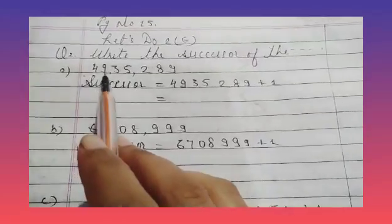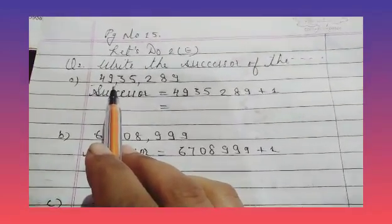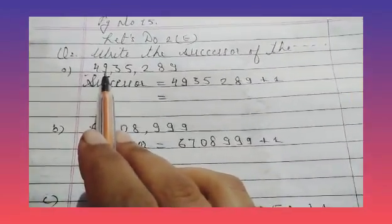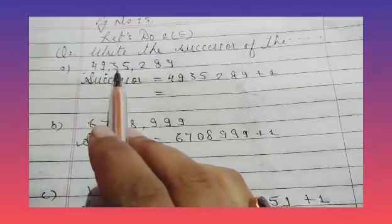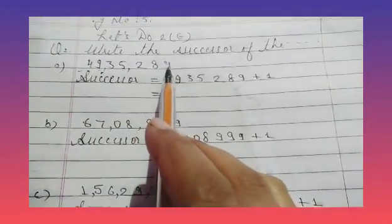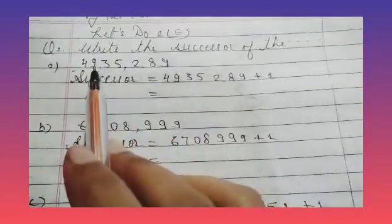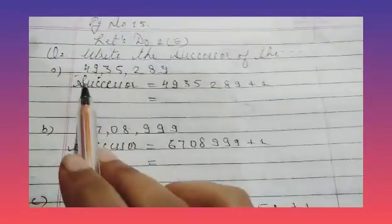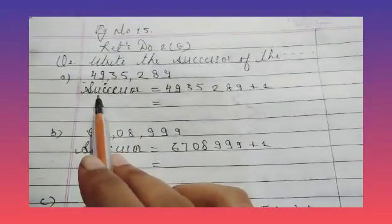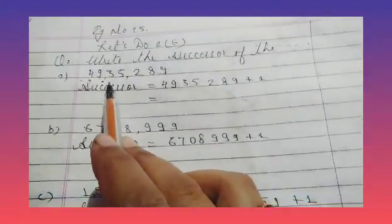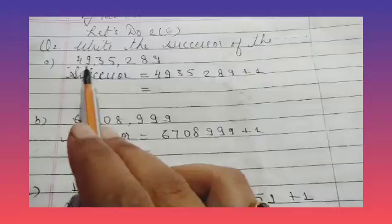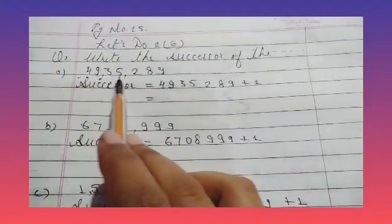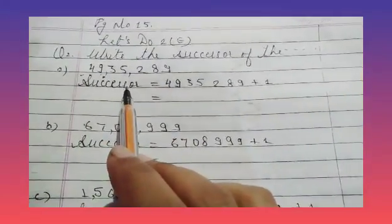So we have part A: 49,35,289. The successor is just after the given number — it is the next number of the given number.